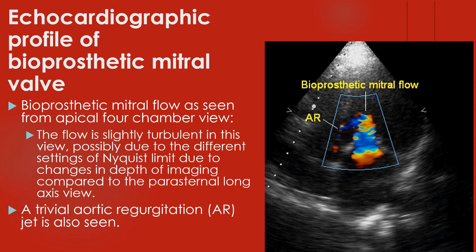Bioprosthetic mitral flow as seen from the apical four-chamber view. The flow is slightly turbulent in this view, possibly due to different settings of the Nyquist limit caused by changes in depth of imaging compared to the parasternal long axis view. A trivial aortic regurgitation jet is also seen.